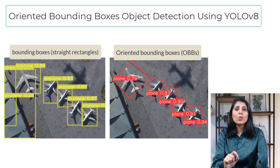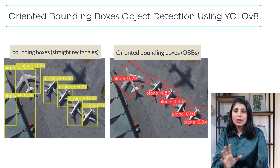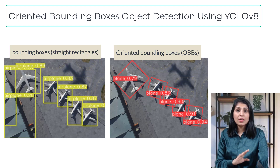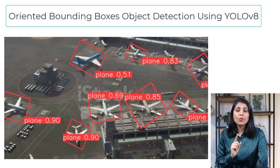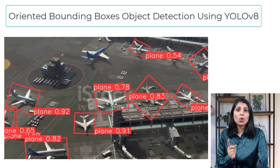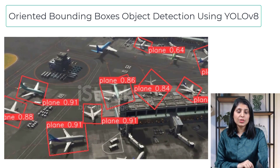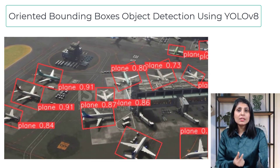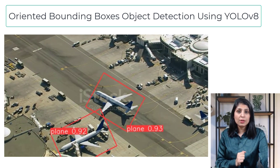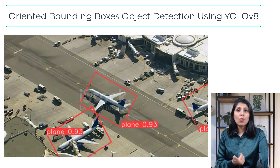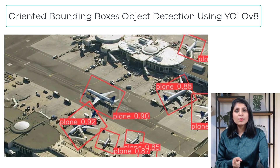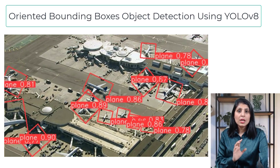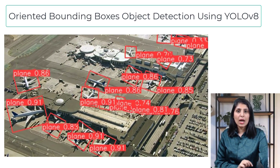The question is which one should we use — bounding boxes or oriented bounding boxes? Bounding boxes are simple and efficient but may not accurately represent rotated or irregular objects. With OBBs we can achieve that, but at the cost of increased computational complexity. OBBs need to determine the orientation of the object carefully and accurately, which involves more calculation. The choice depends upon the specific requirement of the application.